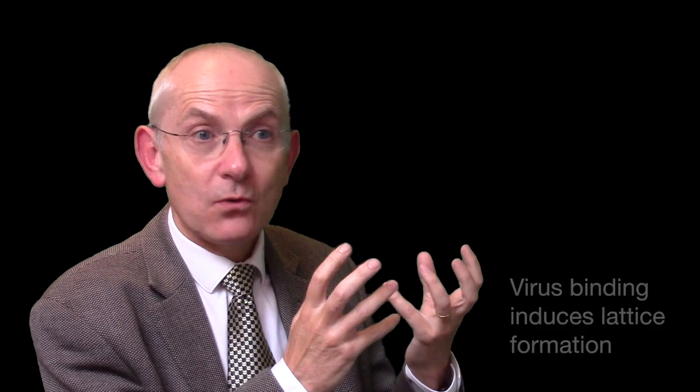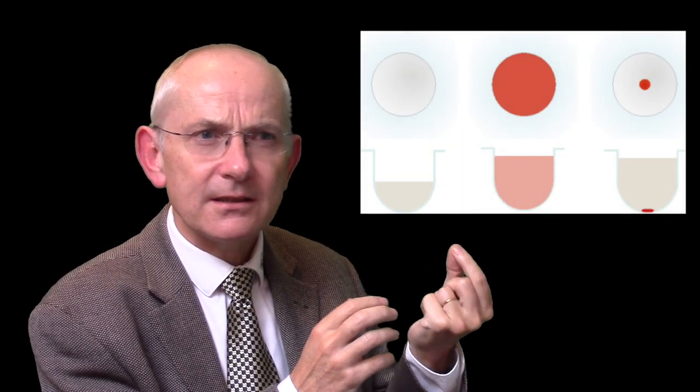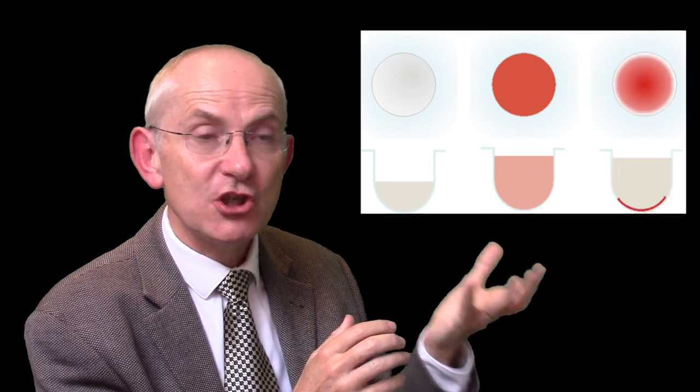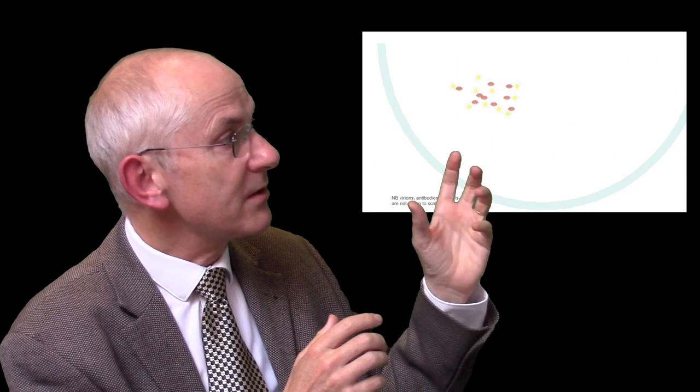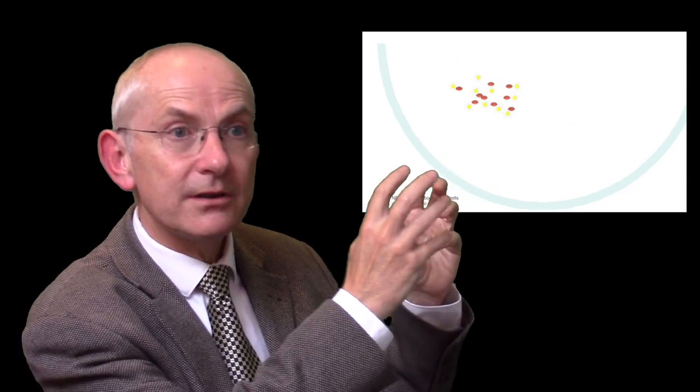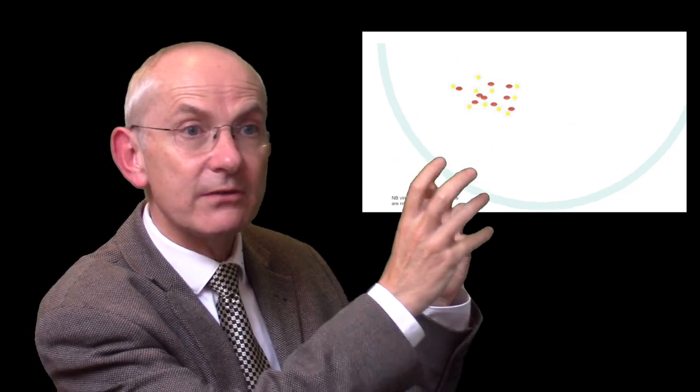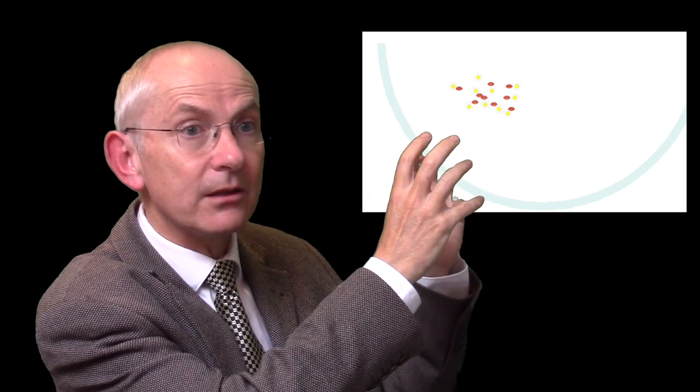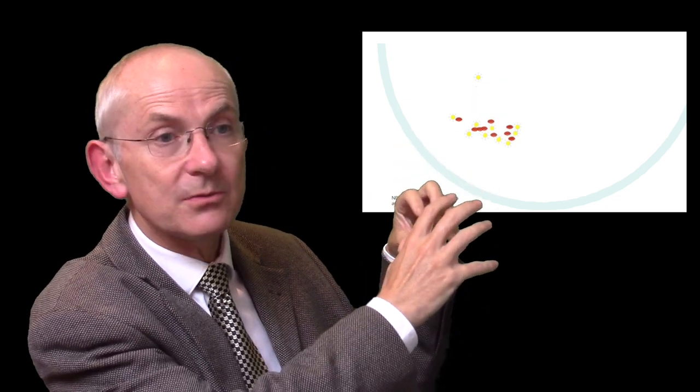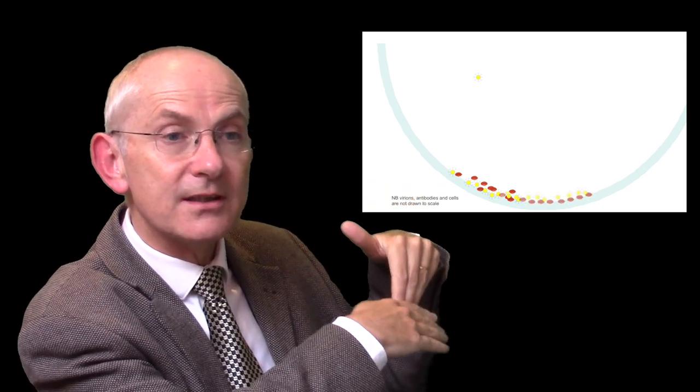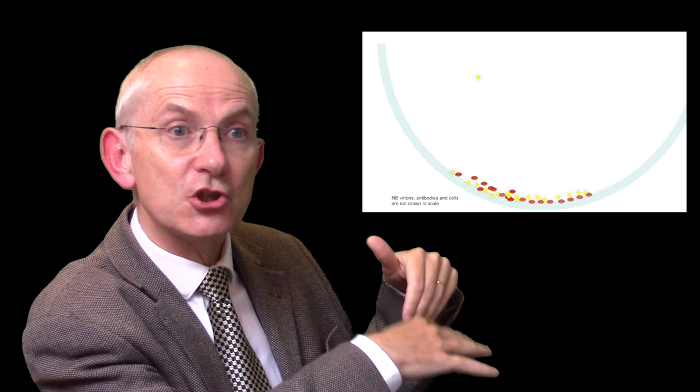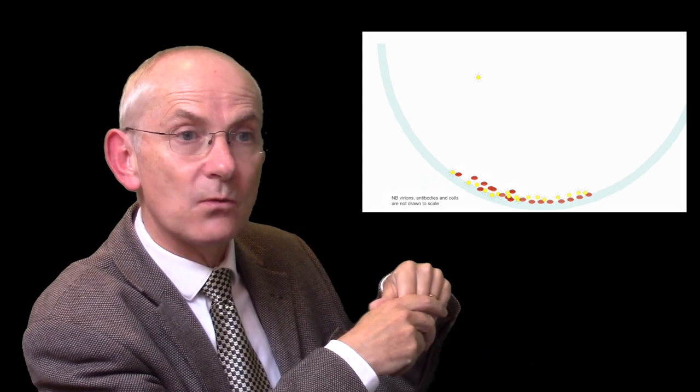However, if you mix the right quantity of the right virus with your red blood cells, instead of getting a button at the bottom of the tube, you get a shield. This happens because the virus glycoproteins are able to bind to molecules called sialic acids on the surface of the red blood cells, cross-linking them so that when they fall to the bottom of the tube, they form a lattice which spreads around the bottom and doesn't sink to form a button, but a shield on the bottom surface of the well.